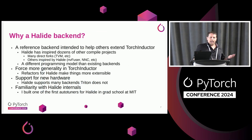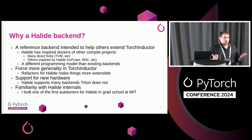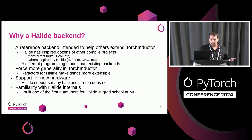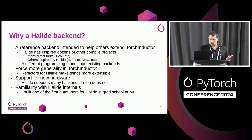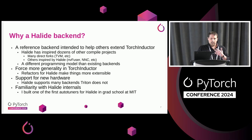So why a Halide backend? The primary motivation is as a reference backend. As a PyTorch developer, pretty frequently hardware vendors or compiler developers come to us and say they want to extend Torch Compile to use their own system. There are lots of different extension points — you can extend Torch Dynamo at the FX graph level, or add a backend to Triton, which a lot of vendors are doing. But if you have a lower-level, kernel-level DSL and you want to extend PyTorch, we really wanted the Halide backend to be a reference that people can start with if they want to extend Torch Inductor with their own kernel-level DSL.